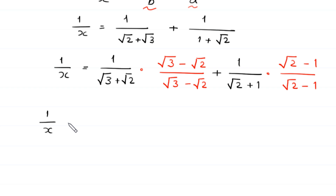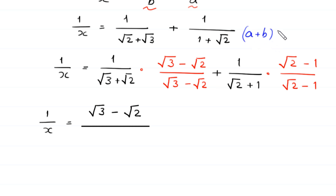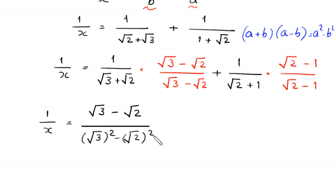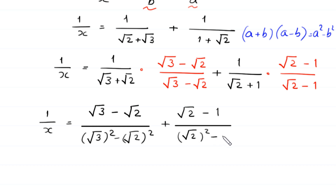Next, 1 over x equals square root of 3 minus square root of 2 divided by: using the algebraic identity (a plus b)(a minus b) equals a squared minus b squared, this square root of 3 plus square root of 2 times square root of 3 minus square root of 2 becomes square root of 3 squared minus square root of 2 squared, plus (square root of 2 minus 1) divided by: using the same identity, square root of 2 plus 1 times square root of 2 minus 1 becomes square root of 2 squared minus 1 squared.